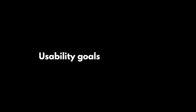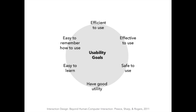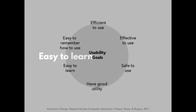What should you be aiming to achieve when creating a usable experience? There are usability goals to aim towards: making an app that is efficient to use, effective to use, safe to use, has good utility, is easy to learn, and easy to remember how to use. Your app should be easy to learn — it should be easy for users the first time they encounter your application to know how to use it or to learn quickly.